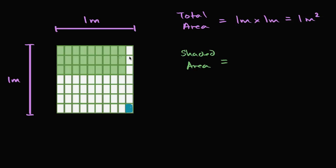So we could try to count them out. We have ten columns, and each column has seven rows. So we have ten columns of seven, or we have 70 of these rectangles. Our entire whole is divided into 70 equal sections. So this one rectangle right over there is 1/70th of the entire area — 1/70th of one square meter — which is of course just going to be 1/70th of a square meter. That's just one of these rectangles.